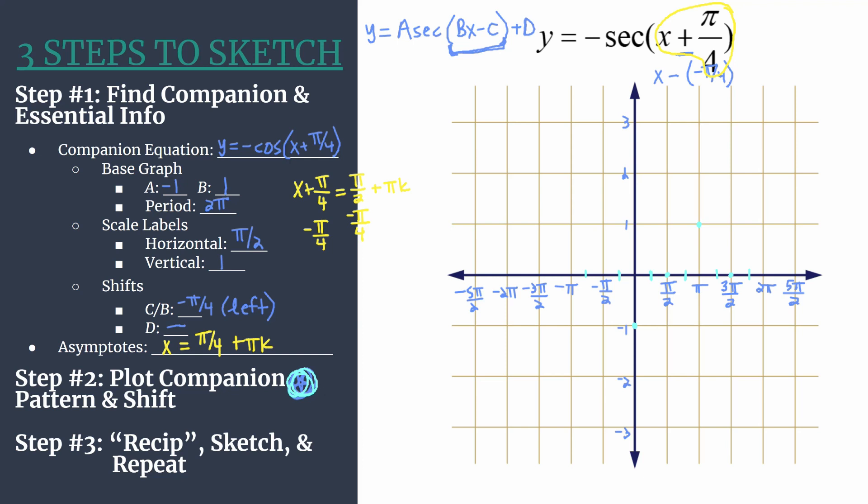So all you need to do is take each of your original companion pattern points and shift them left pi over 4, or half a horizontal grid unit. So I'll mark this pattern with x's. So there's the one that was the y-intercept. Move that x-intercept over. Move the maximum over. And move that other x-intercept over. So we're just shifting everything left, half a horizontal grid unit, or the equivalent of pi over 4 units.